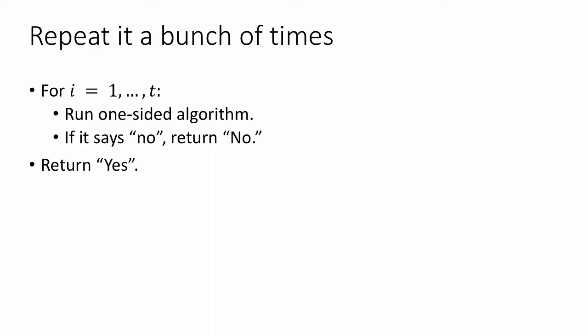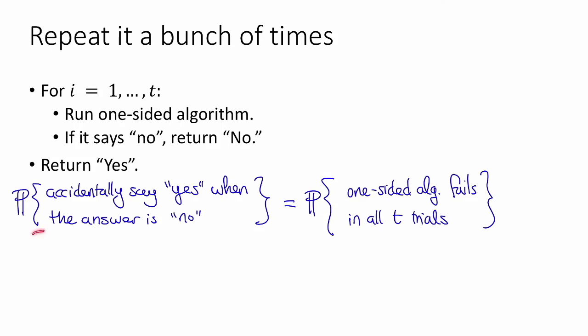So as we said before, if the correct answer is yes, then we'll definitely return yes, because the algorithm will never say no. But if the correct answer is no, then the probability that we accidentally return yes is small. More precisely, the probability that we accidentally say yes is the probability that this one-sided algorithm fails in all t trials. That is at most 1 minus epsilon to the t, because the probability that it fails once is maybe not so small, 1 minus epsilon, but the probability that it fails t times independently is that raised to the t. And this is quite small.